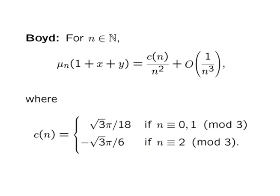Let's go back for a second to that result of Boyd that I mentioned earlier, where he gives an asymptotic for mu sub n of 1 plus x plus y. If you apply my theorem to this polynomial, the coefficient of 1 over n squared in my series exactly matches the coefficient of 1 over n squared in Boyd's result, as you would hope. So this result of Boyd follows as a special case of our theorem.